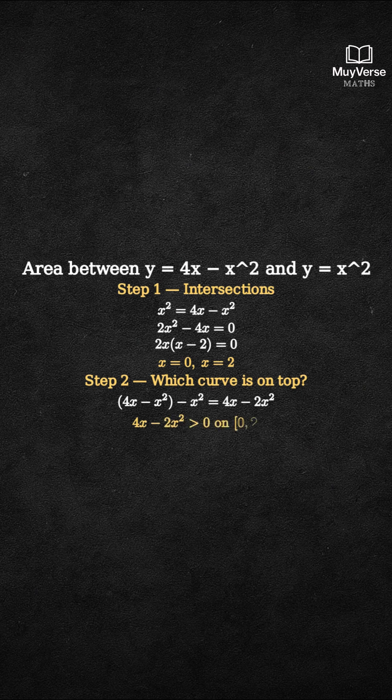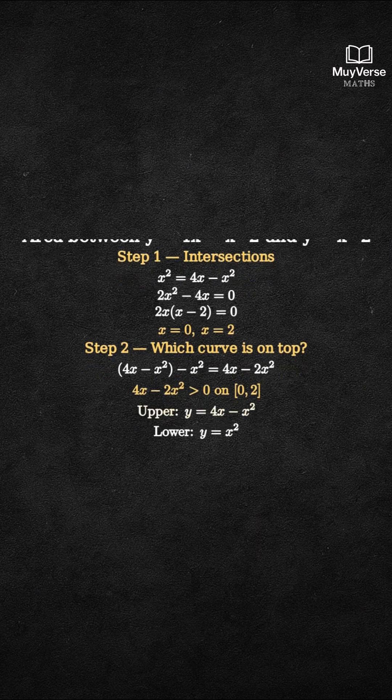On the interval from 0 to 2, this expression is positive. So the upper curve is y equals 4x minus x squared, and the lower curve is y equals x squared.